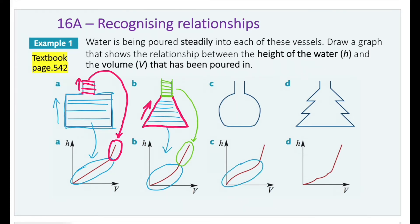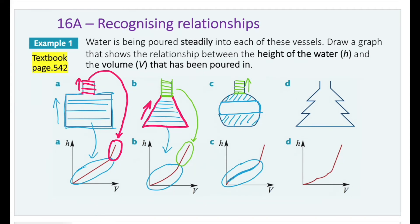For vessel c, we again have a curve first. The reason the curve looks slightly different compared to the curving part in b is that this part contains more volume. From a certain point onwards, as the volume increases the height will increase much faster. Since this shape is cylindrical and regular, the graph becomes linear again, and the water level increases much faster as more water is poured in.